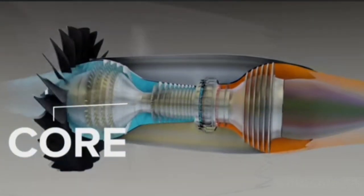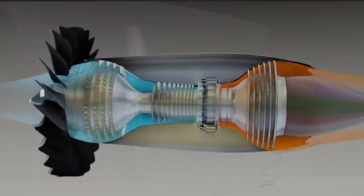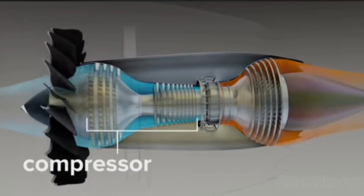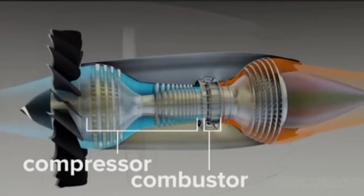Core. The core of a jet engine is a gas generator that creates high-pressure gas to power a turbine. This setup has compressor, combustor, and turbine sections.